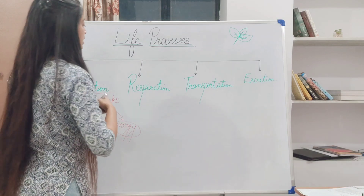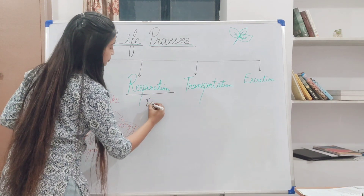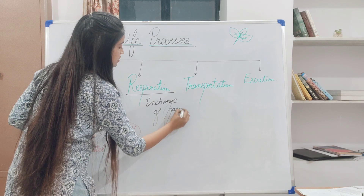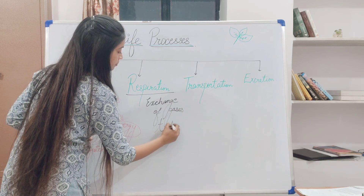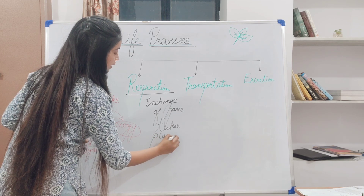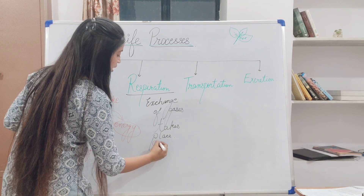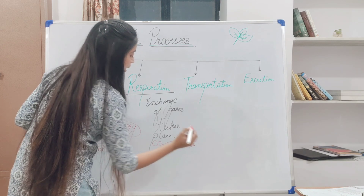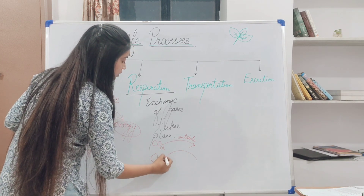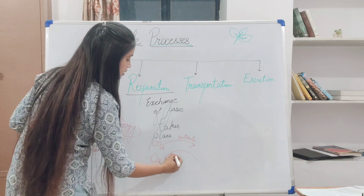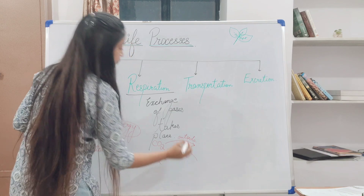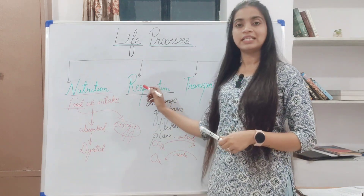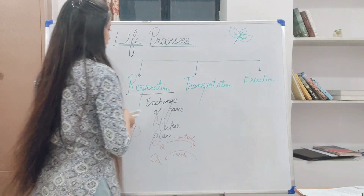The next one is respiration. In respiration, exchange of gases takes place. Carbon dioxide is taken outside the body, and oxygen is taken inside the body from the outer environment. The exchange of gases like carbon dioxide and oxygen is very helpful for the respiration process.